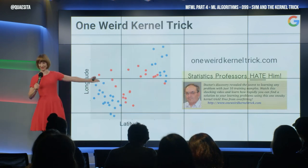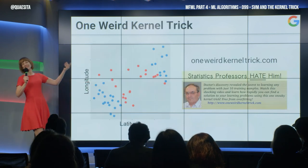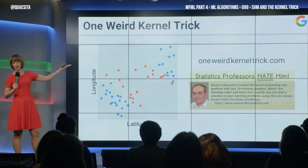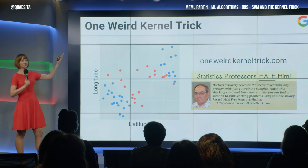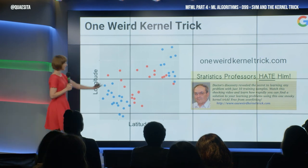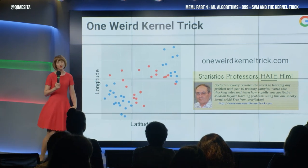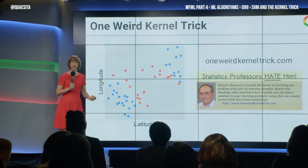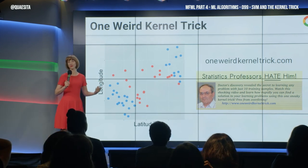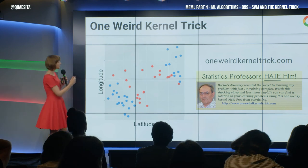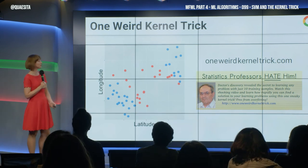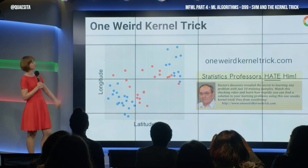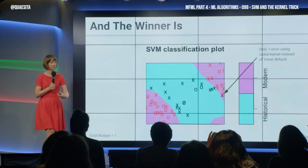And it turns out that there is such a website, and it is in fact run by someone with a sense of humor who has put real learning resources on there. That, for example, is Vladimir Vapnik, who is one of the co-authors of the original Support Vector Machines paper. And the other co-author is our head of research in New York, Corinna Cortez. Her face is also on there, along with a lot of other stuff you can go read if you're interested. So: oneweirdkerneltrick.com.